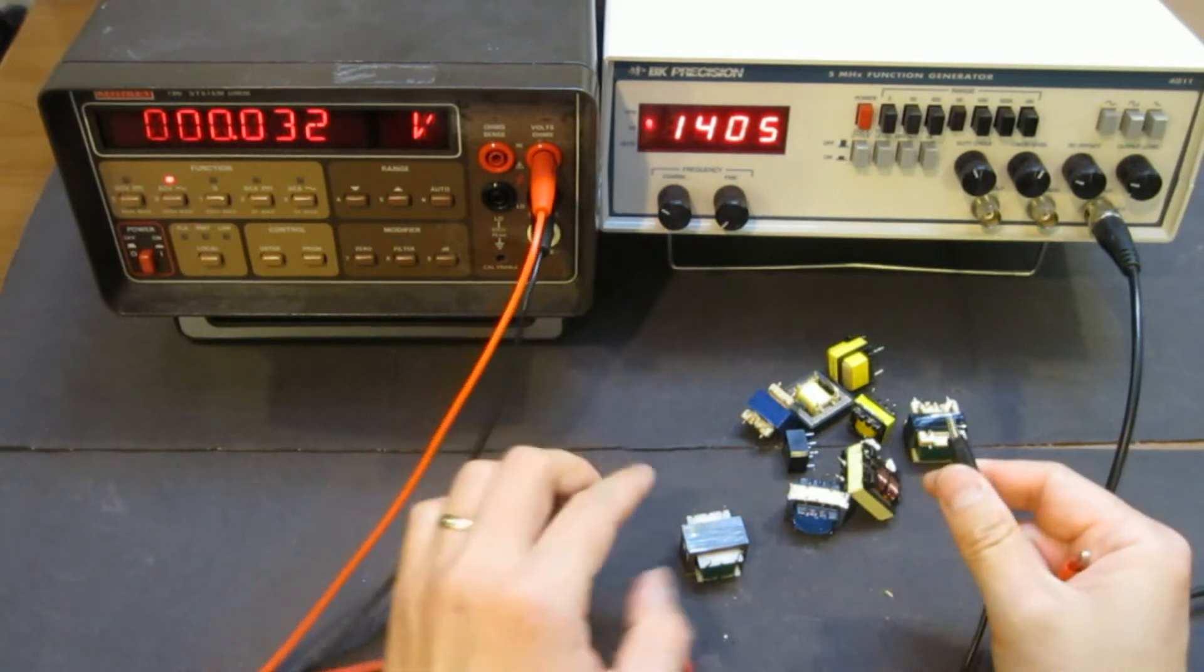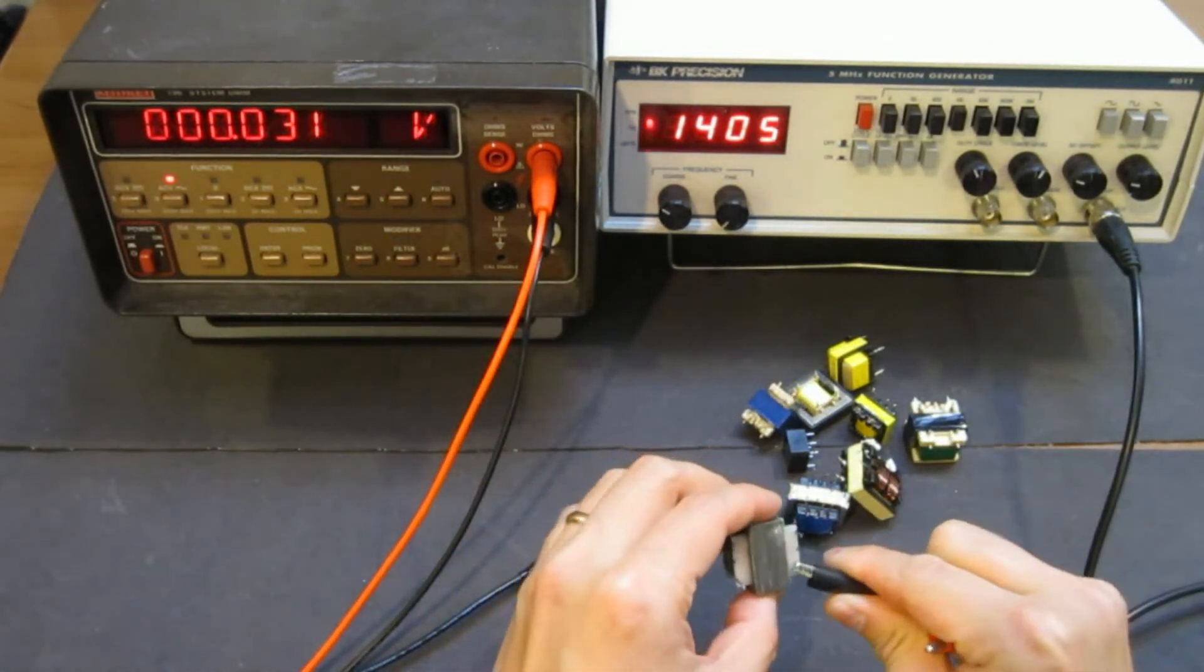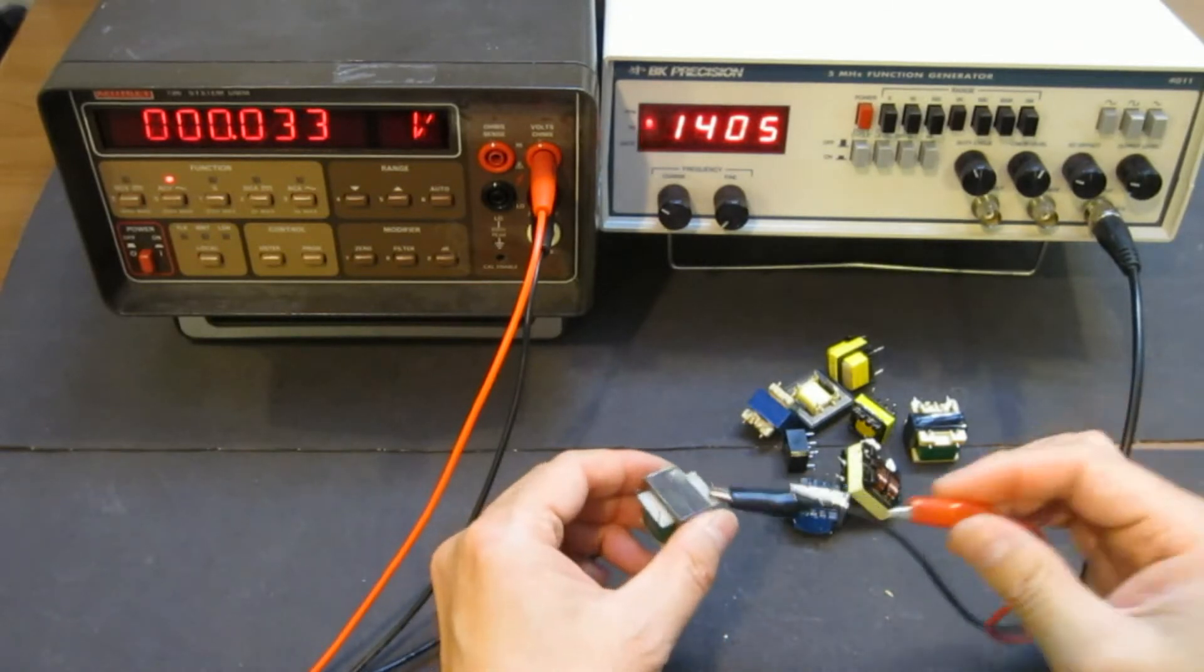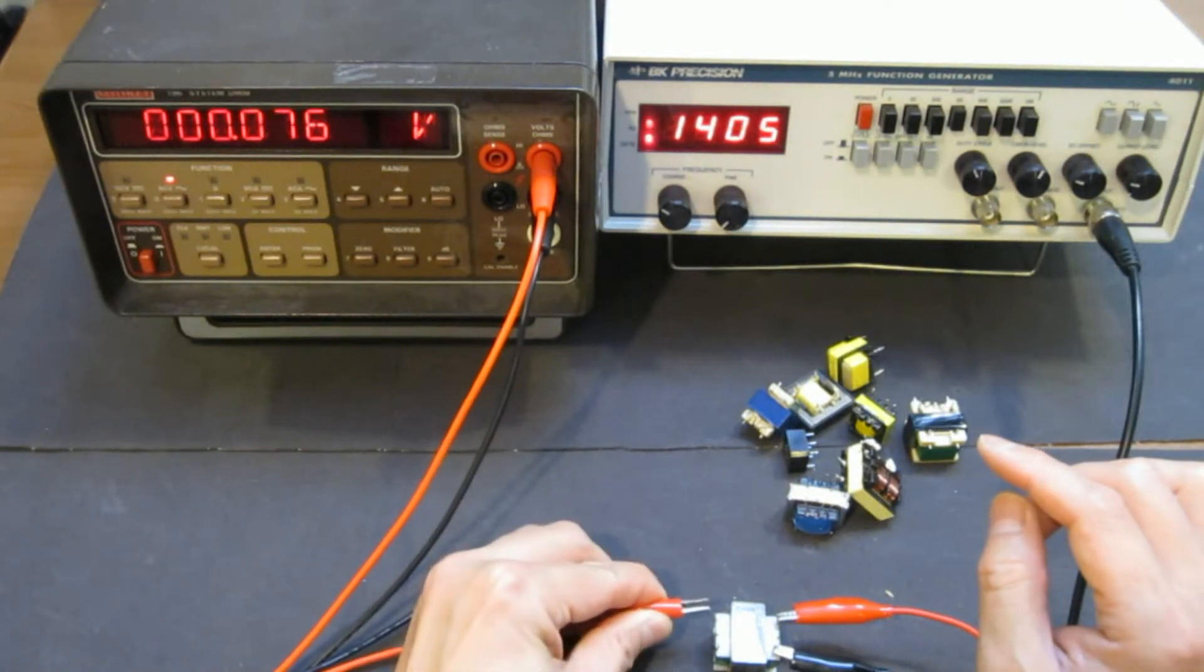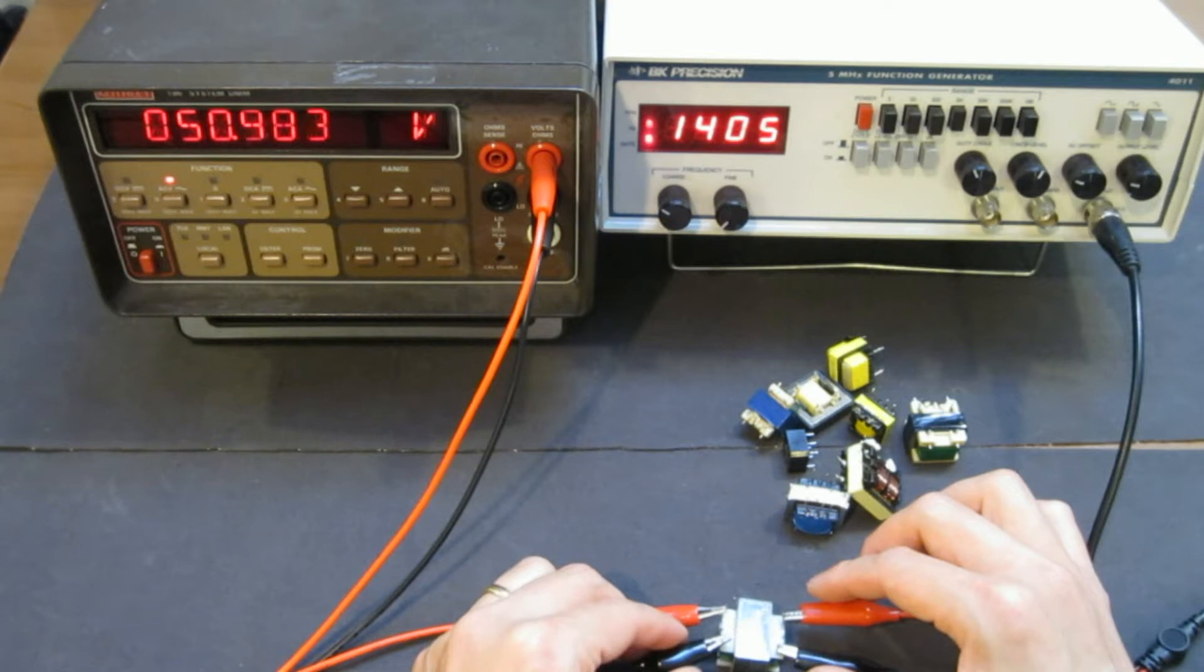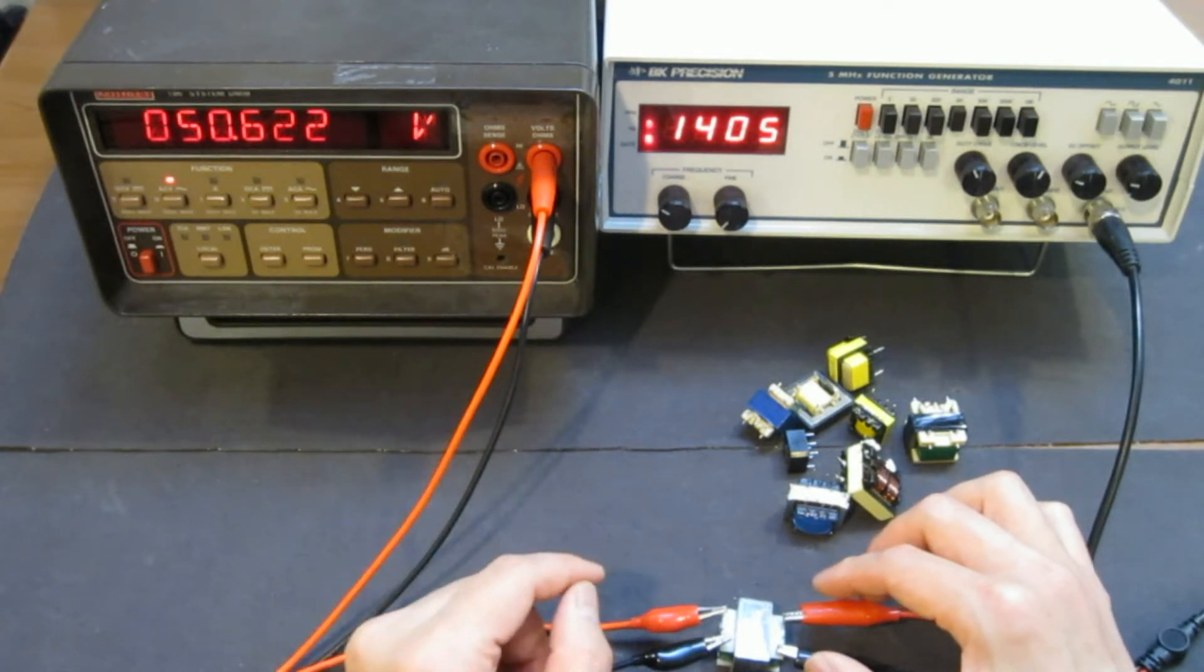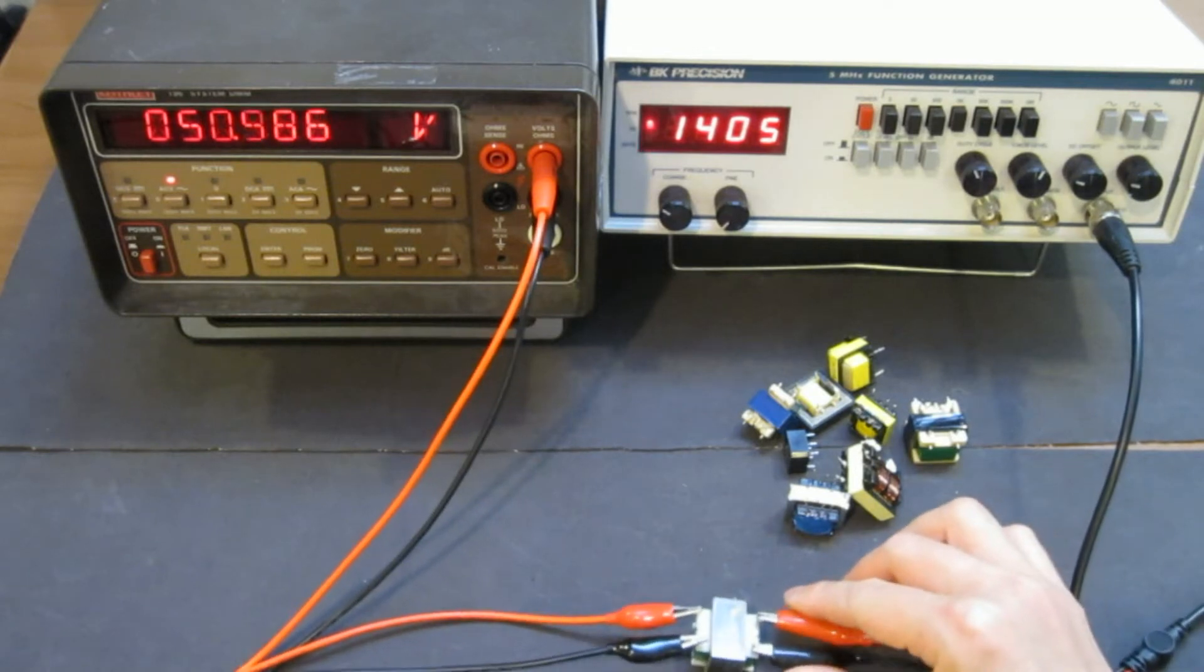So the first one we're going to look at is this little transformer. So again, we're inputting a roughly a 1 volt signal. And we're measuring the output to see what this transformer does. So as you can see, the output is actually 50.6 volts, 50.5. So this clearly is a step up transformer.